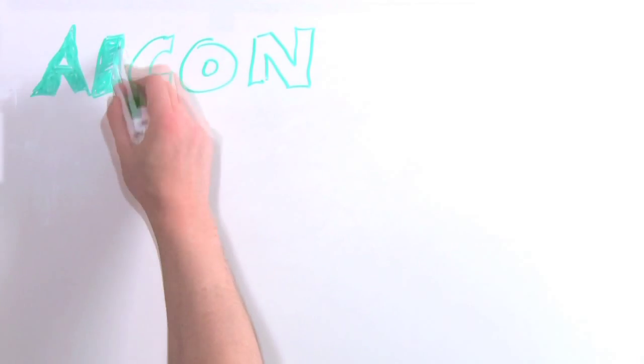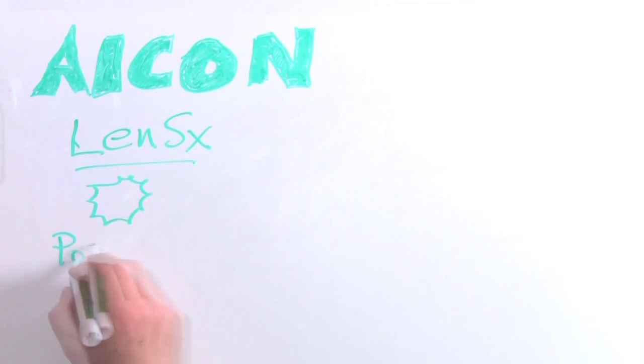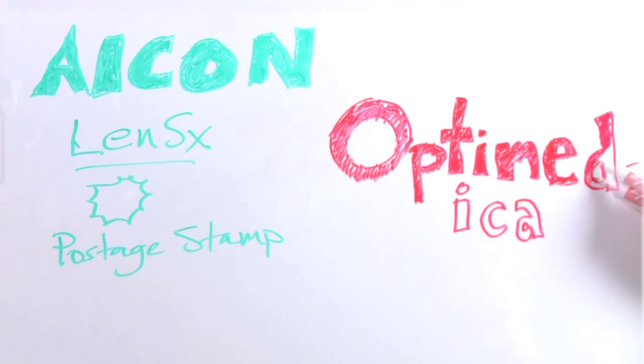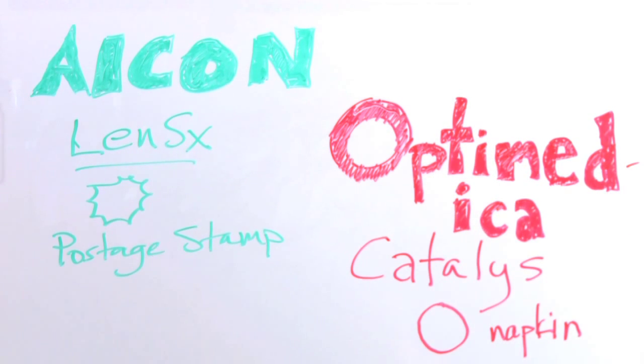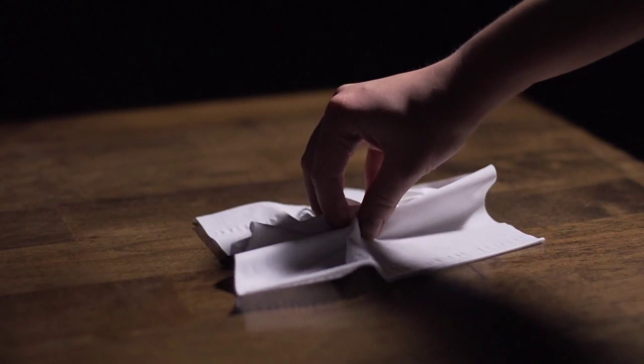The historical postage stamp capsulotomy of first-generation femtosecond cataract lasers has indeed posed many challenges, while the napkin type of capsulotomy, such as that consistently fashioned by the Optometica Catalyst, is far preferable. We expect that all laser systems will continue to evolve and improve with the goal of consistently creating a napkin capsulotomy, which makes your surgery a success.